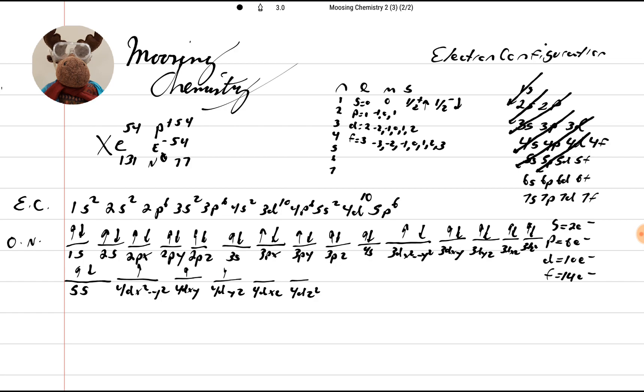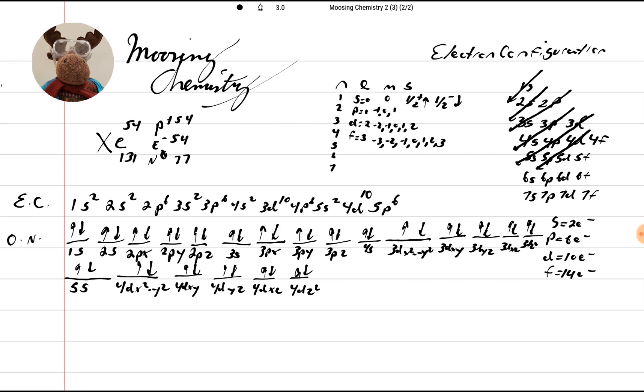We're going to go 1, 2, 3, 4, 5, 6, 7, 8, 9, and 10. Then we're going to go 5PX, 5PY, 5PZ.